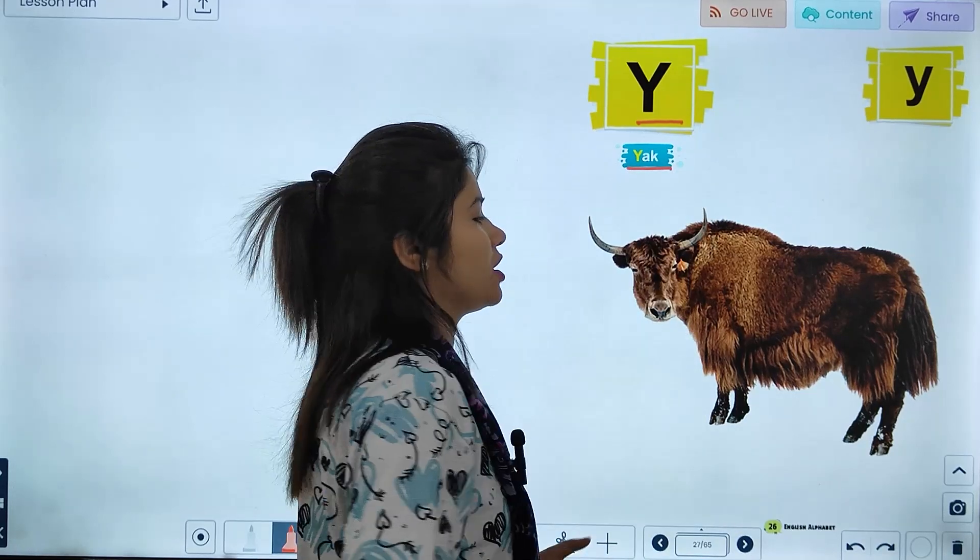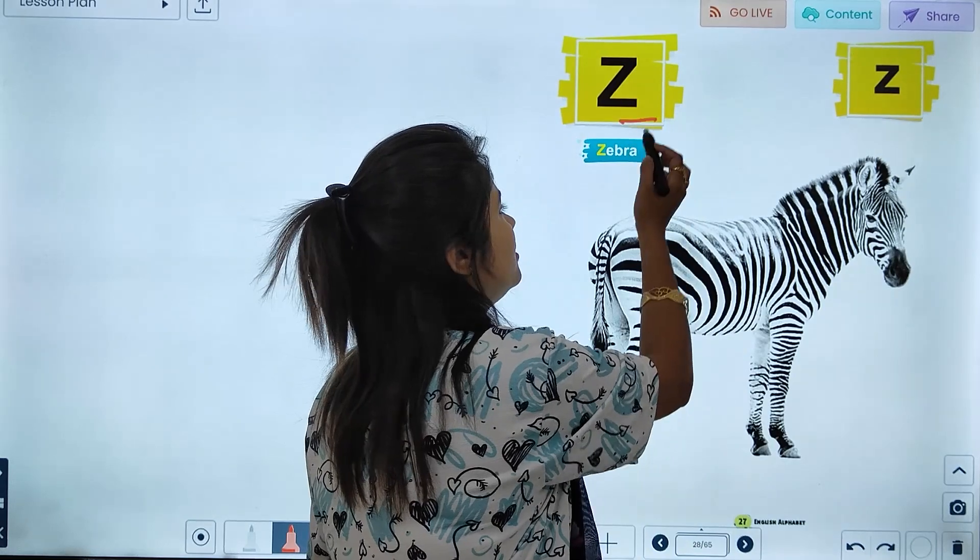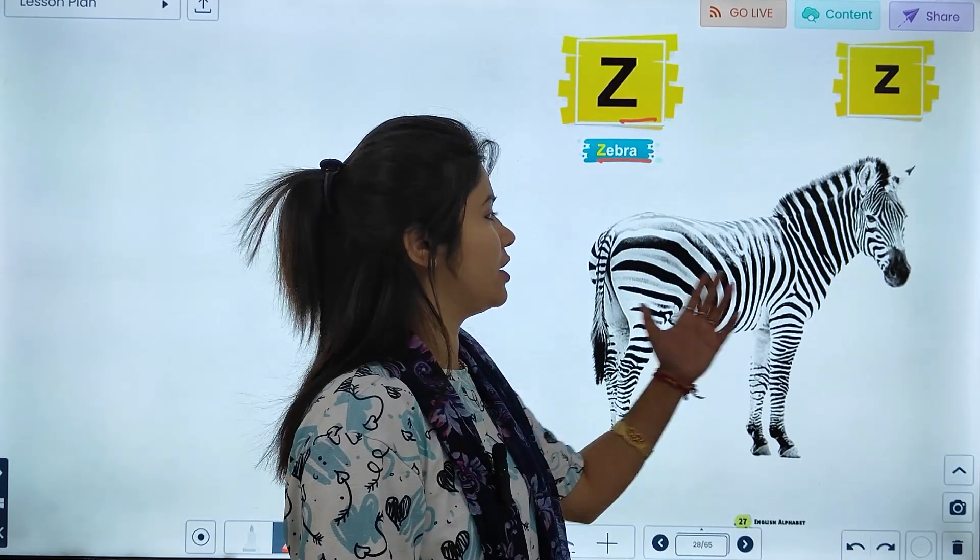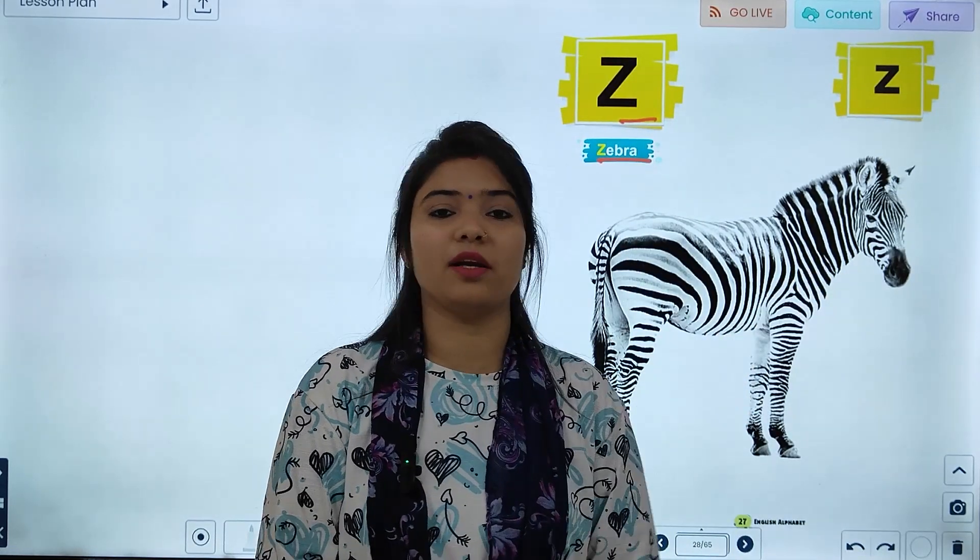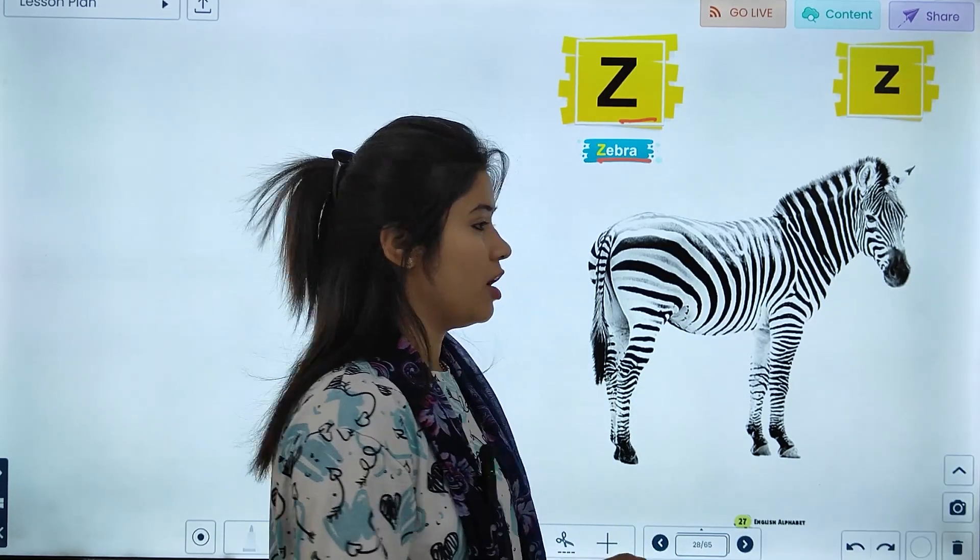V, Y for Yacht. So, what picture do you have? Y, Yacht. Z for Zebra. So, what picture are you seeing here? Zebra. Z for Zebra.